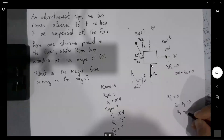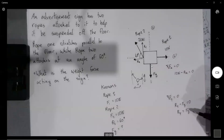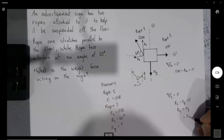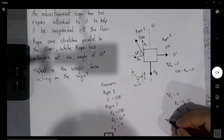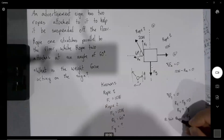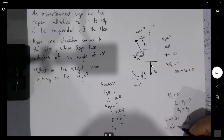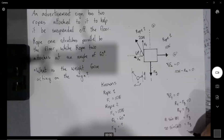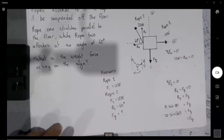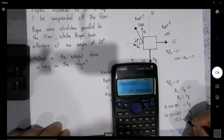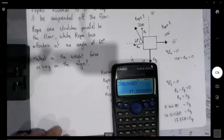Newton's third law tells us the y-component of rope two equals the weight force — that's what we're solving for. So Fg equals the tension in rope two times sine(theta) equals 20 newtons times sine(60°). We find that Fg equals 17.32 newtons. That is the weight force of the advertising sign.